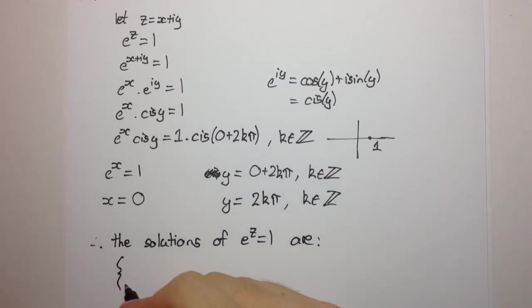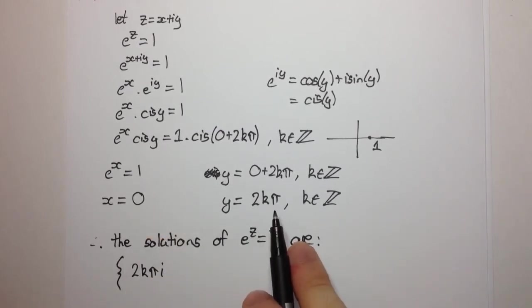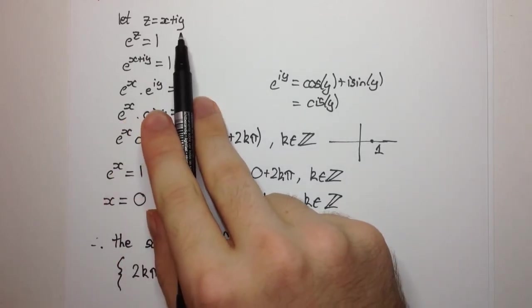So this is in the form of 0 plus iy, or x plus iy, where x is 0 and y is 2kπ. So we have our y part multiplied by i, because it's z equals x plus iy.